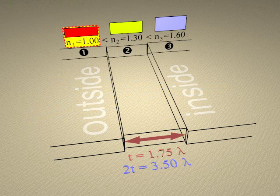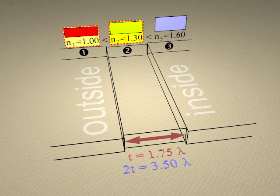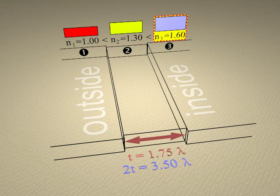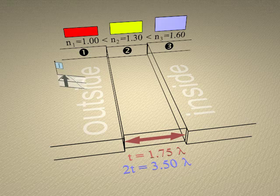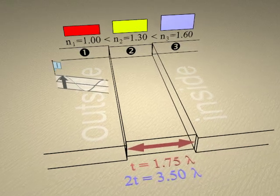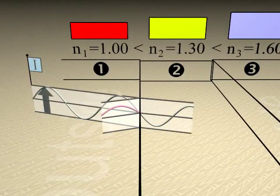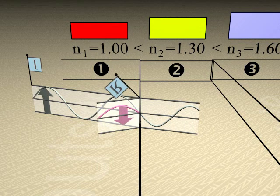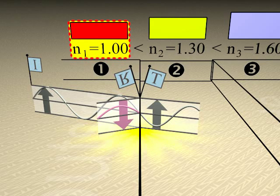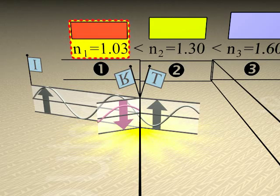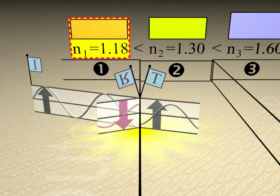First, we begin with a series of media with increasing refractive indices. As the incident beam enters from the outside medium, it encounters the boundary between the outside medium and the thin film. At the boundary, part of the beam is reflected and part is transmitted. The reflected wave is emitted inverted or upside down since the reflecting thin film has a higher index.